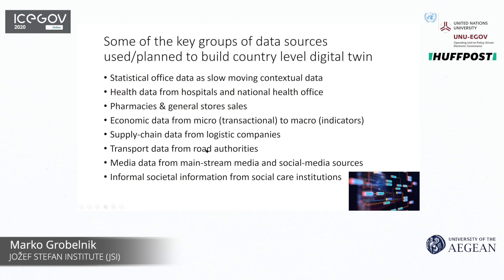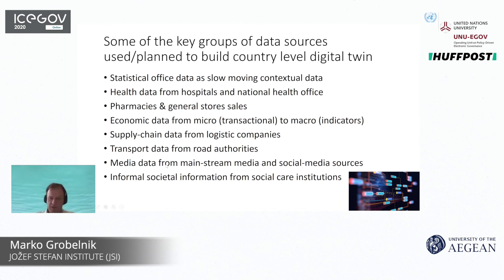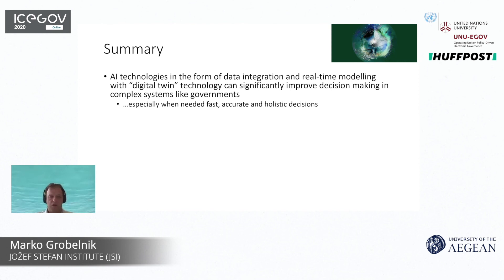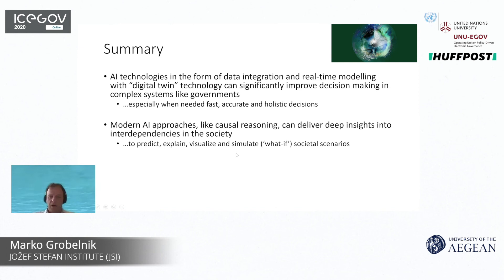We have a system to track all mainstream media in the country in real time, and social media — which initially seemed less important — is now extremely important in the time of disinformation. Informal information from society, such as social care institutions, rounds out the data sources we integrated to build the digital twin. In summary, AI technology is useful and capable of real-time modeling within this digital twin paradigm, especially when we need fast, accurate, and holistic decisions.